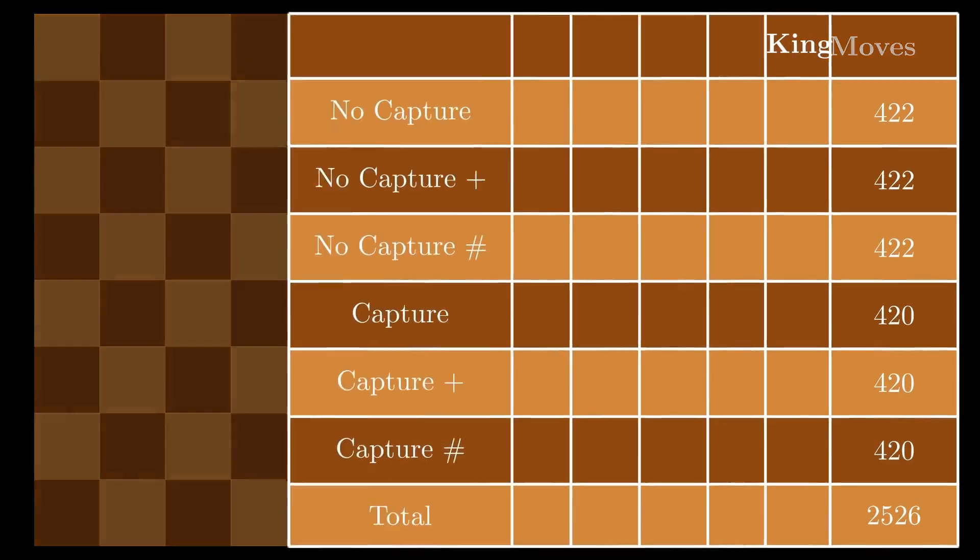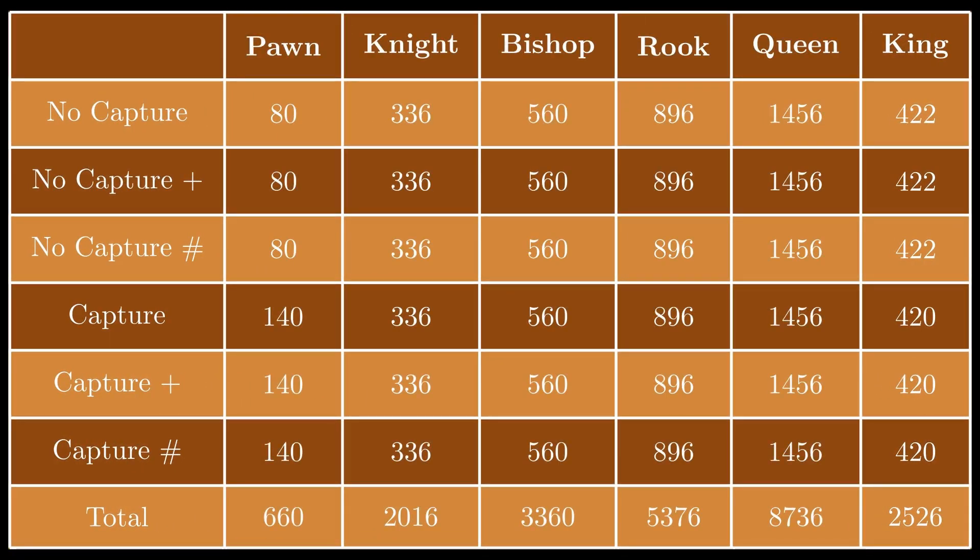Here is the full table of potential moves. Whenever you sit down to play a game of chess you may play one of an astronomically huge number of games, but you will only be choosing from a list of 22,674 moves to actually play.